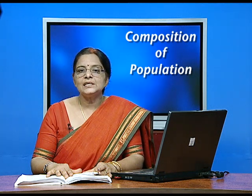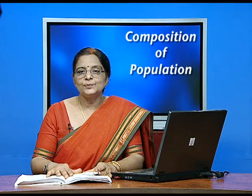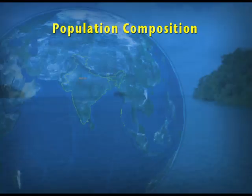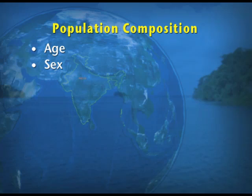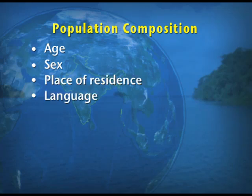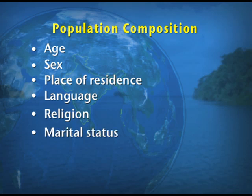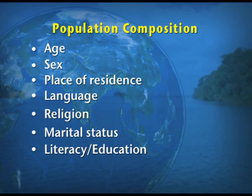What are these attributes? Under these, we include the age, sex, place of residence, language, religion, marital status, literacy or education, and occupation.